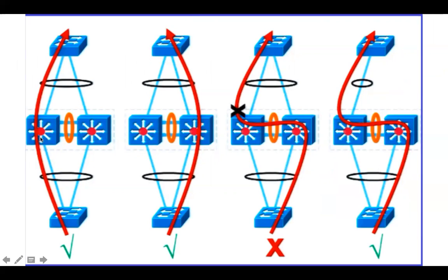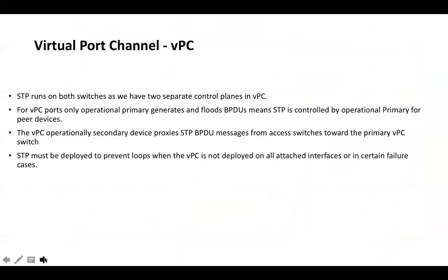To understand better: Switch 1 is receiving traffic on a member port and sending it out of a member port. Switch 2 is also receiving traffic on a member port and sending it out of a member port. When Switch 1 receives traffic on the peer link, the VPC check comes in — it is not allowed to send it out of any member port because the remote peer is up. If the remote VPC member port is down, traffic received on the peer link may be sent out of the member port. This is how we avoid loops in the VPC domain.